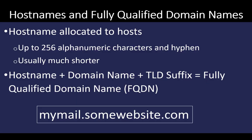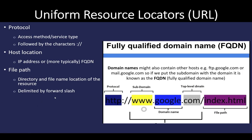On both a local area network and the internet, we have something called a fully qualified domain name, which means listing the host name — for example, 'mymail' — with the domain name and the TLD suffix together. Internet websites also refer to a URL, or Uniform Resource Locator, which additionally includes a protocol at the front — such as HTTP — a subdomain like www, the domain name like Google, the top-level domain .com, and finally a file path telling it which web page to retrieve.